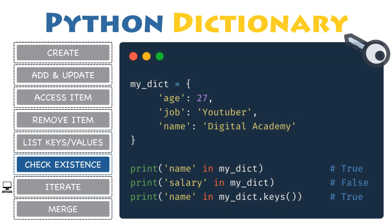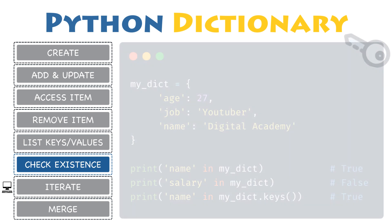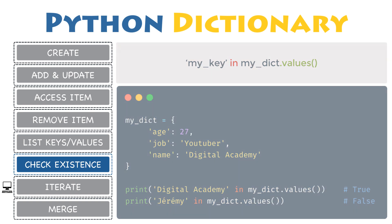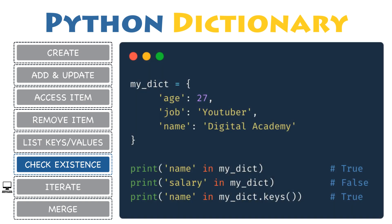If you want to know if a key exists in a dictionary, use the in and not in operators with an if statement. You can also use the keys() method to check whether your key is part of the dictionary's keys. To check whether a certain value exists in a dictionary, use the in operator combined with the values() method. Let's assume you have a dictionary with the following properties: age, job, and name.